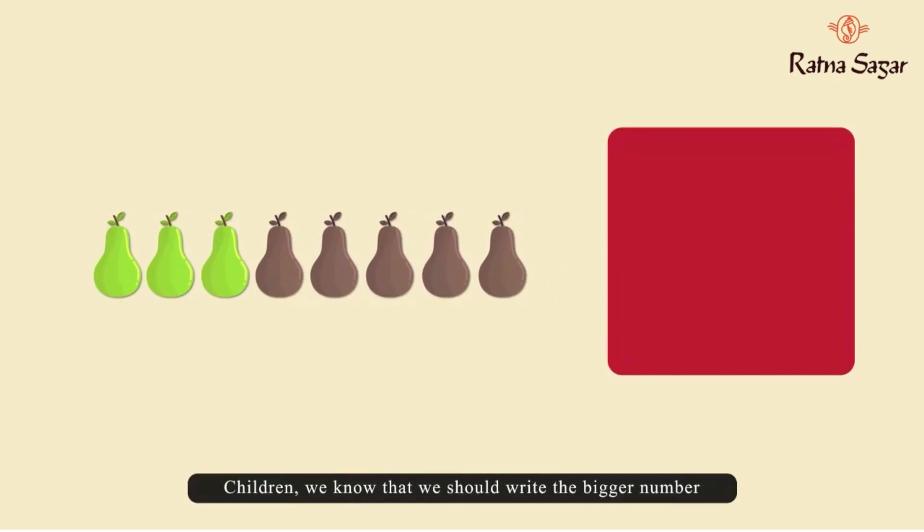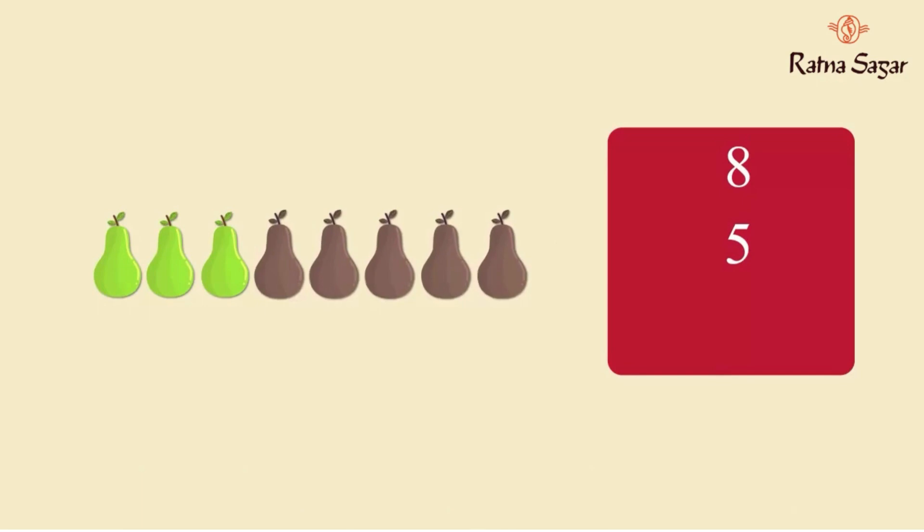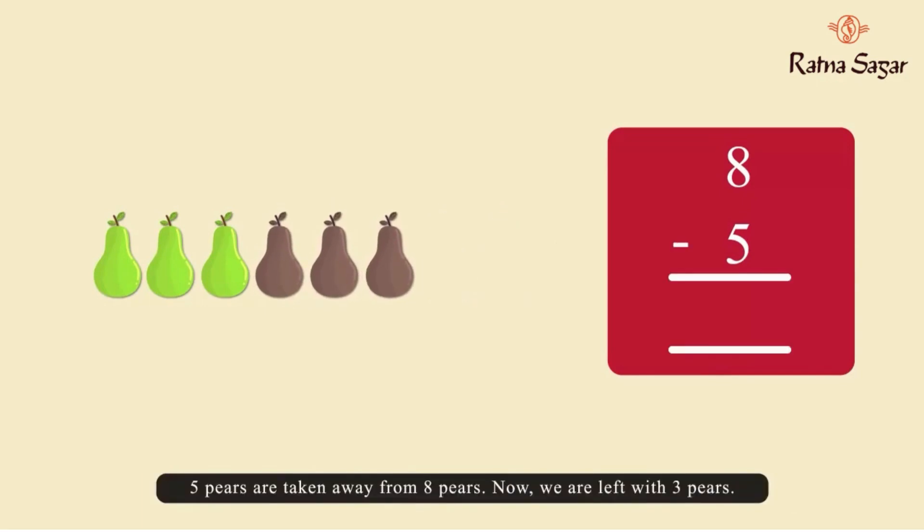Children, we know that we should write the bigger number above the smaller number. So we write the number five below the number eight. Five pears are taken away from eight pears. Now we are left with three pears.